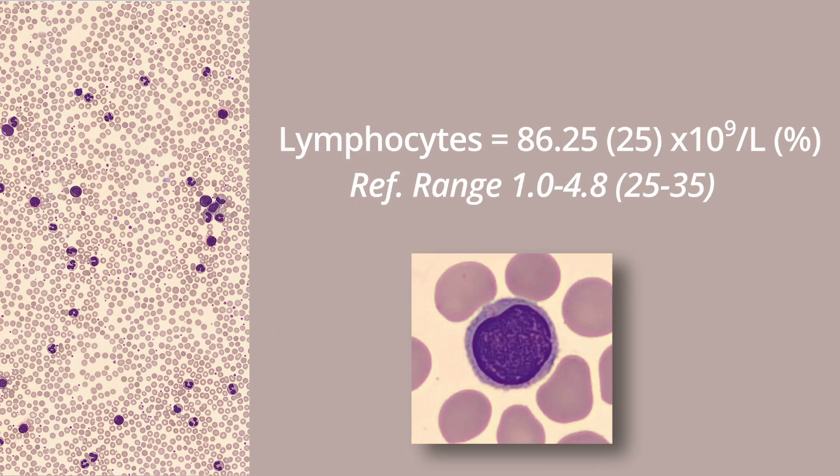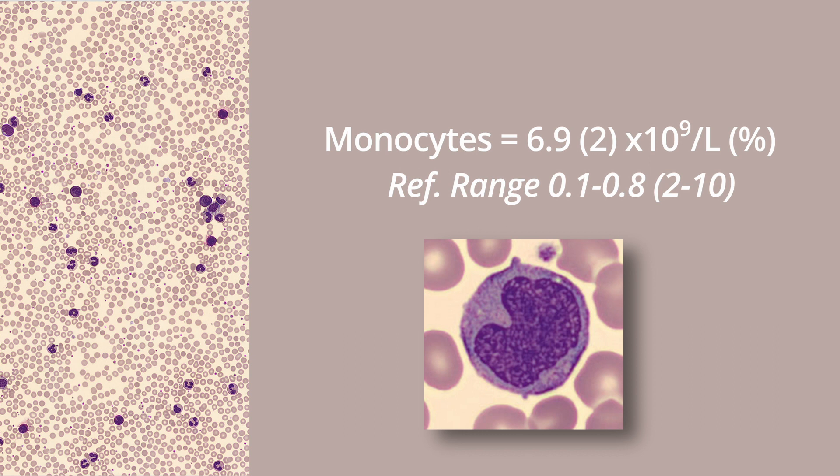The lymphocytes are 86.25, which is an absolute value increase, but the relative value of 25 percent is within normal range and they don't look concerning, so we can likely exclude anything on that path. The monocytes are 6.9, or 2 percent, and have a normal appearance. If they were increased, immature, or abnormal looking we would have extra considerations, but for this analysis we can exclude them.